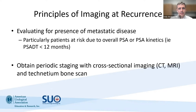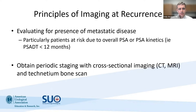The principles of imaging at recurrence involve looking for the presence of metastatic disease, particularly in patients who are at risk due to overall PSA or PSA kinetics, such as a PSA doubling time less than 12 months. In this instance, we attain periodic imaging, and the guidelines to date recommend cross-sectional imaging such as CT scan and a bone scan.